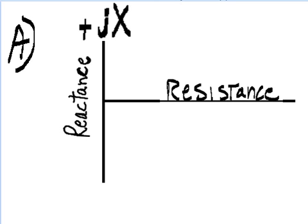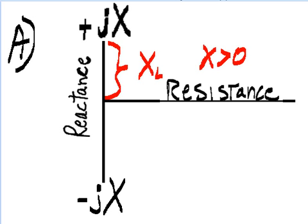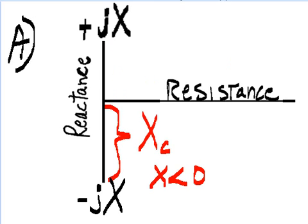Here is positive jX. Here is negative jX. Positive jX would be the inductive reactance where X is greater than zero. The negative jX would be the capacitive reactance where X is less than zero.